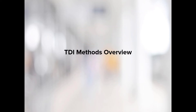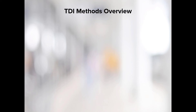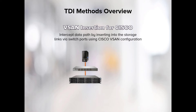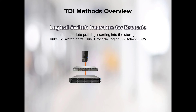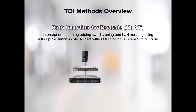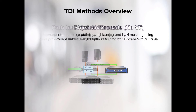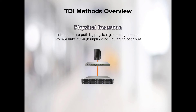There are four transparent data path intercept methods. The first is vSAN insertion for Cisco. With this insertion method, the data path is intercepted by inserting the appliance into the storage links via switch ports using Cisco vSAN configuration. The next method is logical switch insertion for Brocade. Using this method, the data path is intercepted by inserting the appliance into the storage links via switch ports using Brocade logical switches. If the virtual fabric feature for Brocade is not licensed, path insertion can be used. With this intercept method, the data path is intercepted by adding switch zones and LUN masking using virtual proxy initiators and targets without turning on the Brocade virtual fabric.